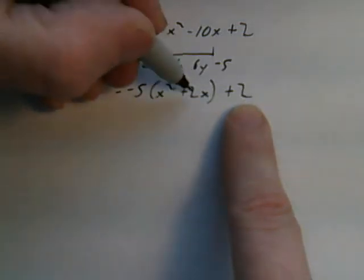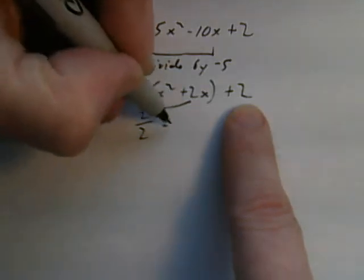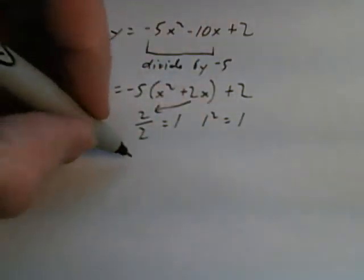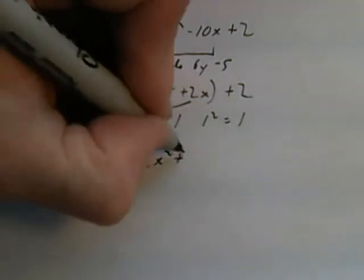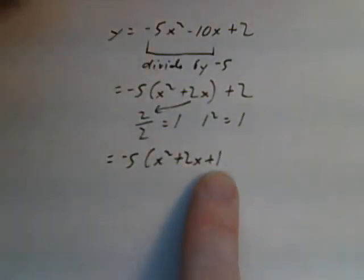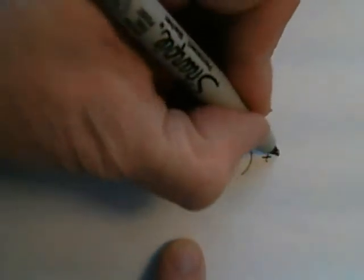So just as before, I say 2 divided by 2 equals 1 and 1 squared equals 1. So now I'm going to rewrite it. Now I'm going to add in the 1, but as this 1 was not in the original equation, I'm going to subtract it as well, plus 2.